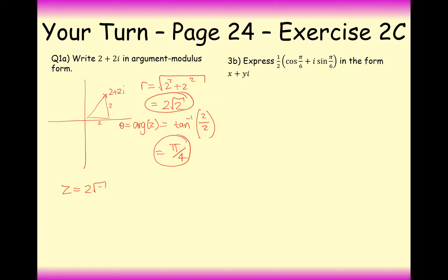So it goes 2 root 2 bracket cos pi by 4 plus i sine pi by 4. And it's as easy as that. Just make sure you remember the form that it looks like and how you're substituting the modulus in the argument and you're there. The difficult part is working out the modulus in the argument, not putting it in argument modulus form because that's just remembering it.